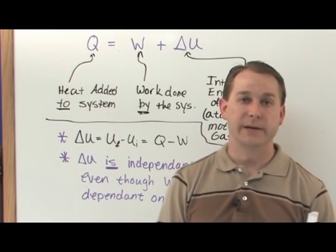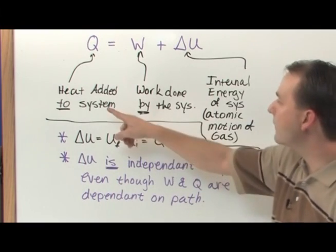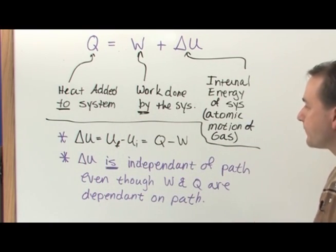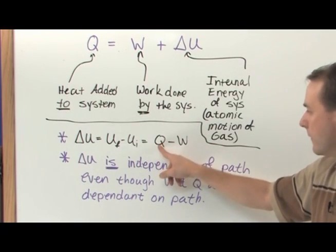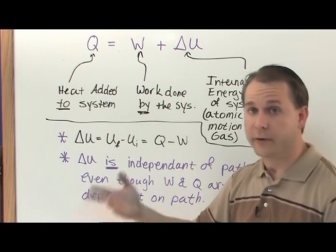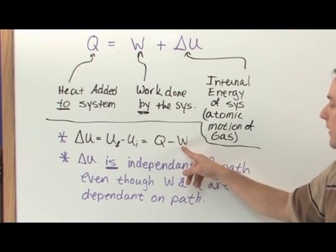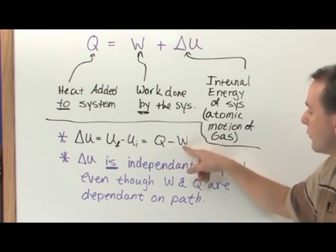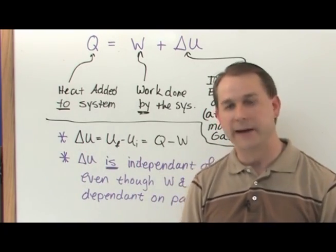So whenever you look at those different paths, going this way and this way and this way and all that stuff that we were talking about before, every path is going to lead to a different Q if you were to actually measure it or calculate it and do an experiment. And every path when you calculate the work done is going to be different. But in each case, when you subtract the Q and the W for that path, you will always get delta U that will be the same for every single path you take.